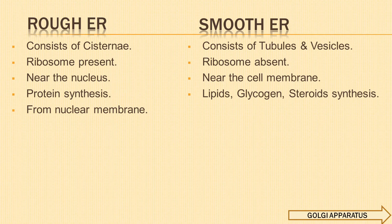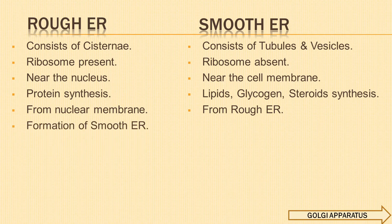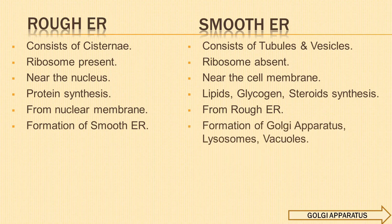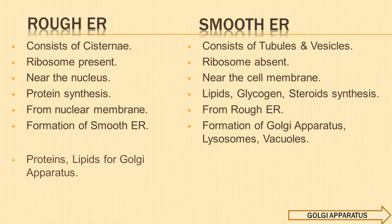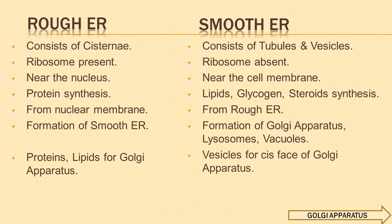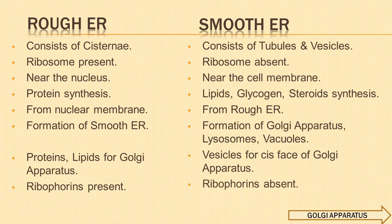Rough endoplasmic reticulum is formed from the nuclear membrane by outfolding; smooth endoplasmic reticulum is formed from rough endoplasmic reticulum by detachment of ribosomes. Rough endoplasmic reticulum helps in the formation of smooth endoplasmic reticulum, while smooth endoplasmic reticulum helps in the formation of Golgi apparatus, lysosomes and vacuoles. Rough endoplasmic reticulum provides proteins and lipids for Golgi apparatus; smooth endoplasmic reticulum provides vesicles for the cis-phase of Golgi apparatus. Glycoproteins called ribophorins are present in rough endoplasmic reticulum for binding ribosomes; such structures are absent in smooth endoplasmic reticulum.